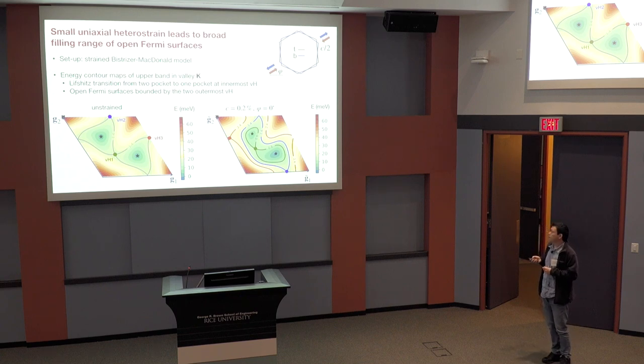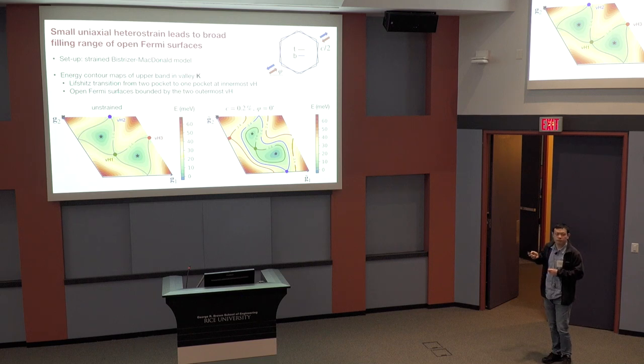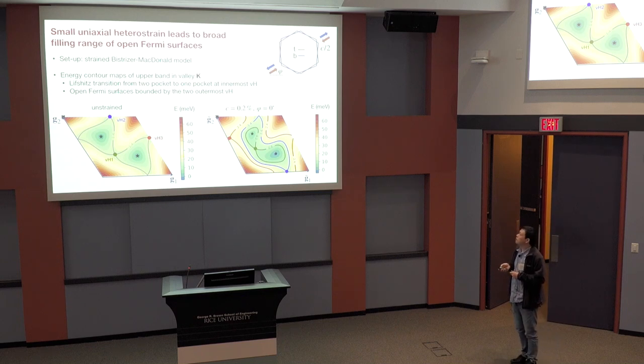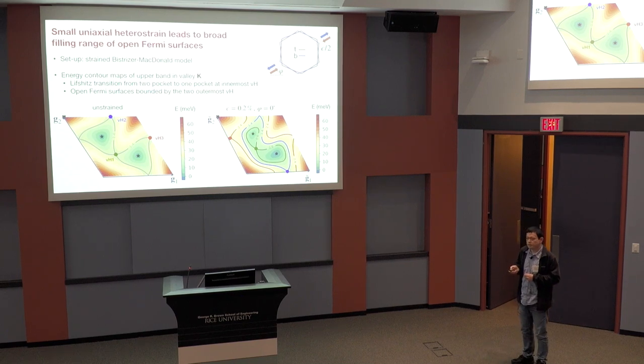And then further moving up in energy, so from the second and the higher-most van Hove point, one gets this entire open Fermi surface chains, which are elongated along one direction. And finally, we reach this region where we get constant energy contours surrounding the gamma point. Also, interestingly, the strain doesn't have much effect on the overall bandwidth of the system.